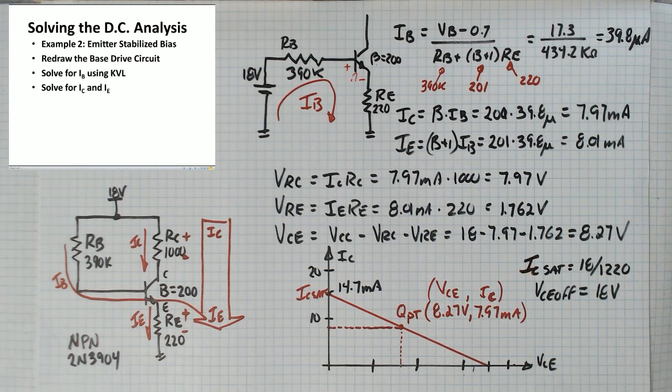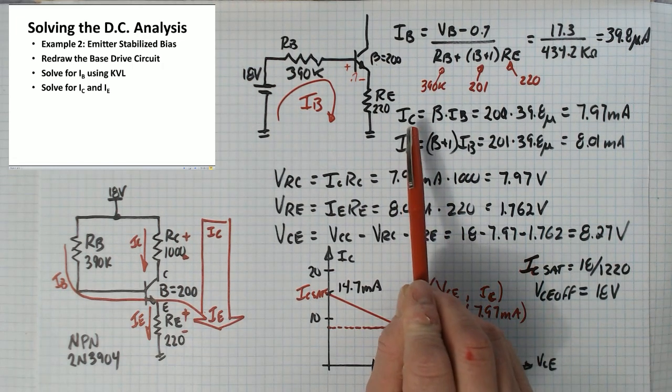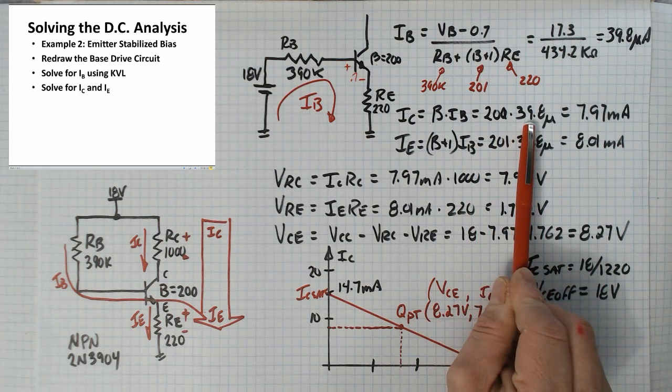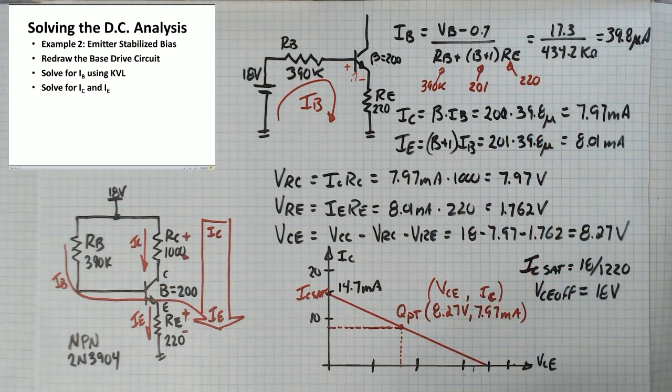Then we need to solve for IC and IE and that's done just by multiplying by beta. So IC is beta times IB which is 200 times 40 microamps or about 7.97 milliamps.